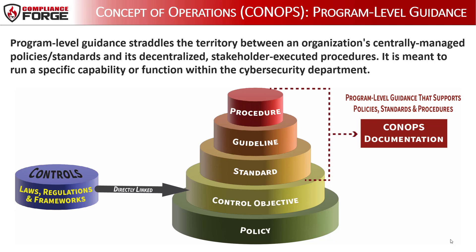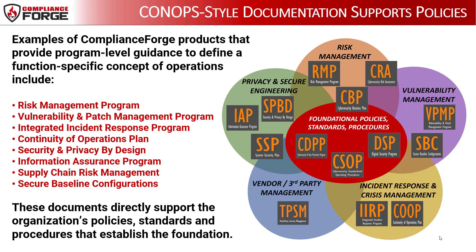These documents serve as expert-level guidance meant to run a specific capability or function within an organization's cybersecurity department. For example, risk management is a specialty within broader cybersecurity practices. A risk management team would use a CONOPS-type document to help communicate risk management considerations and requirements to project managers, integrators, vendors, decision makers, and other stakeholders. Examples of Compliance Forge products providing program-level guidance include the risk management program, vulnerability and patch management program, integrated incident response program, continuity of operations plan, security and privacy by design, information assurance program, supply chain risk management, and secure baseline configurations. These documents directly support the organization's policy standards and procedures that establish the foundation of the overall cybersecurity and privacy program.